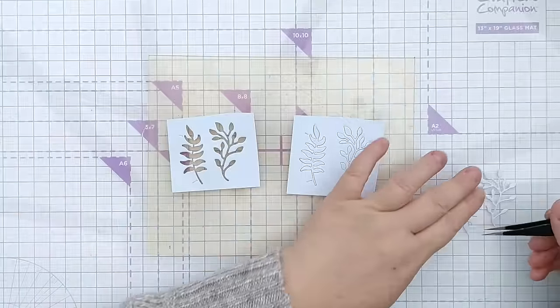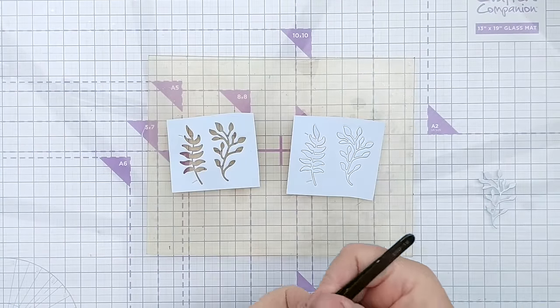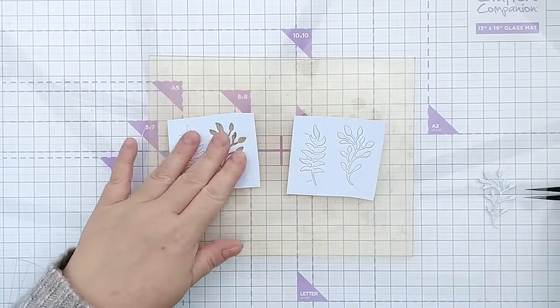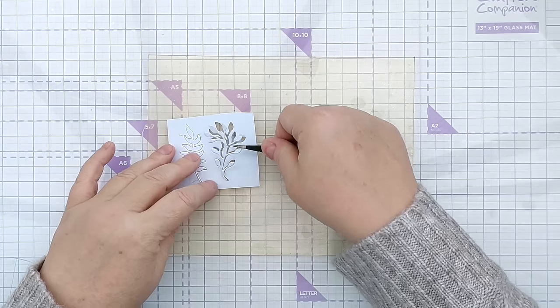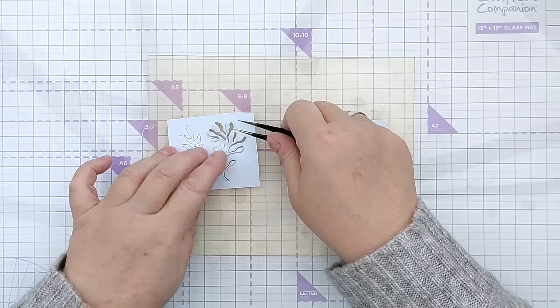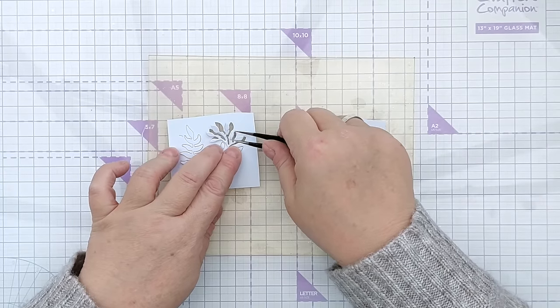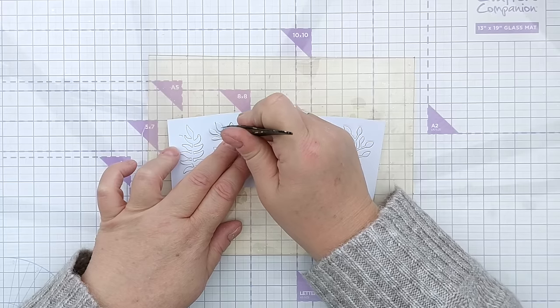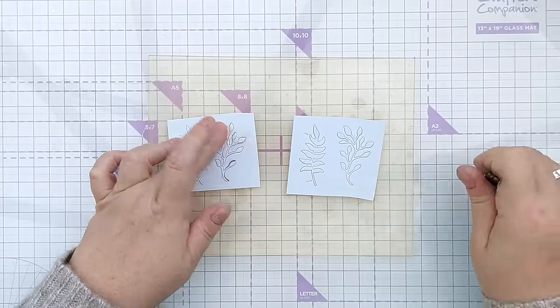Once those were die cut, I put them on my photopolymer grip mat to hold them still. I also put them back in the card that I die cut them from on my grip mat, again to hold them still while I inked them up. You could ink the paper before you die cut it, but often I like to ink after because you get a bit of a different effect. The die cut catches the ink in different ways and intensifies it in different areas.